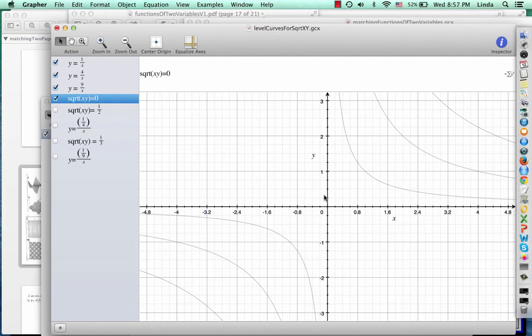Now, why is it that nothing showed up when I did this level curve? Because the square root of x times y equals 0 happens when x times y equals 0. In other words, when x is 0 or y is 0, and those are just the y-axis and the x-axis, which don't appear on this graph, because they're on top of the axes that are already plotted.